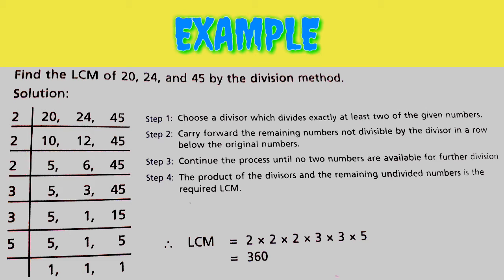Step 3: Continue the process until no two numbers are available for further division — it means at this step further division is not available. Step 4: The product of the divisors and the remaining undivided numbers is the required LCM.